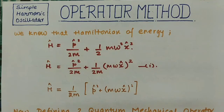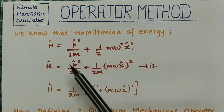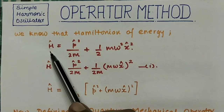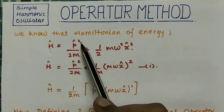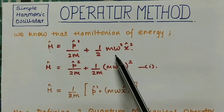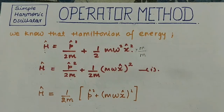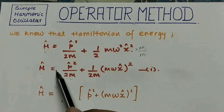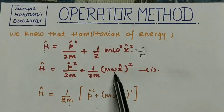This derivation is very important for students pursuing their BSc and MSc. To derive this operator method, we know that the Hamiltonian is the total energy of the system. As discussed in the previous video, the Hamiltonian is H = p² / 2m + ½mω²x². Here H is the Hamiltonian equal to p-cap squared over 2m plus 1 over 2m times (mωx-cap) squared.